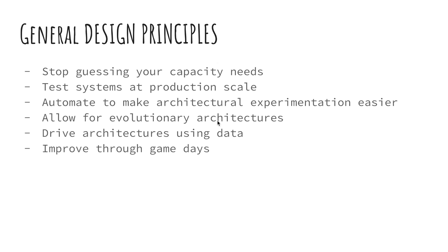You want to allow for evolutionary architectures. For example, if you have an application using an EC2 instance running 24/7, you might look into AWS Lambda or serverless architecture to replace that EC2 instance. Similarly, you can use many other services being released by AWS to do things in a better, more cost-effective and easier way. You want to drive architectures using data — collect lots of metrics, see exactly how your application is behaving, and provision the right type of resources.